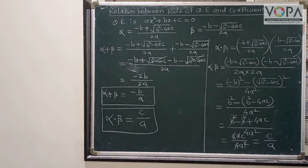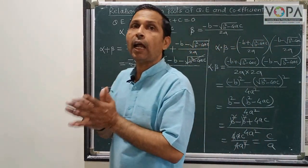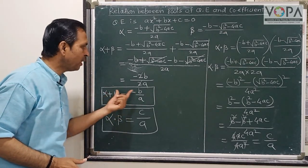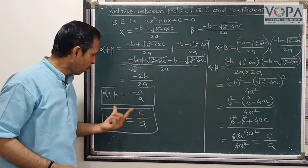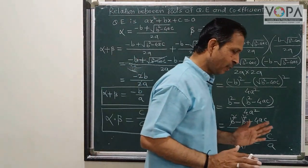This is the relation: α + β = -b/a and α × β = c/a.